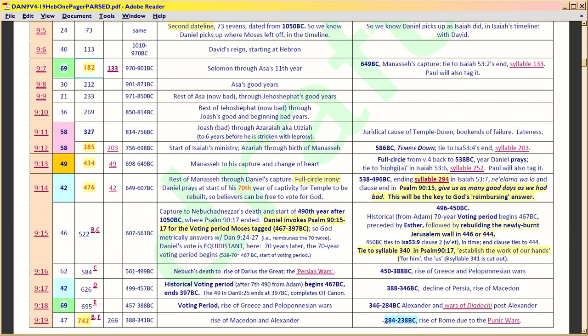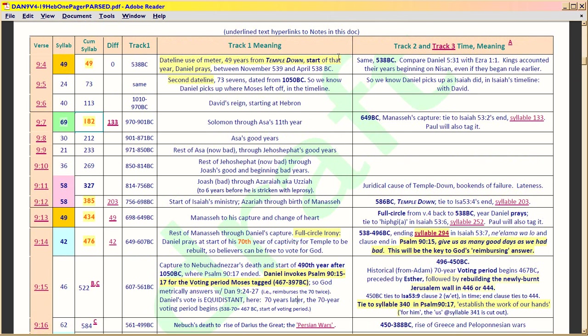Daniel's going future on multiple accounting tracts. One of the ways he's doing it is that he's indexing time — actually three tracts all together. He's indexing time to Isaiah. That's syllable 133 in Isaiah — he's tracking that. In Isaiah, that references Manasseh. Manasseh is the cause of Temple Down. He's tying the juridical to the actual timeline. In the same syllable, he's also tracking to Solomon through Asa's 11th year. It's very sophisticated.